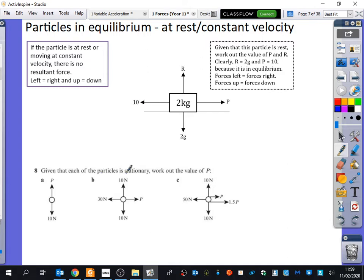It says, given that each of these particles is stationary. Well, if it's stationary, that means it's in equilibrium because there is no acceleration. So we can work out the value of P.